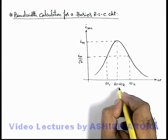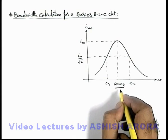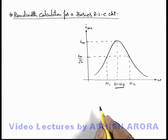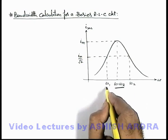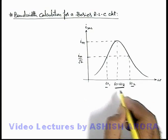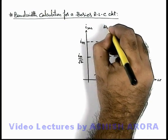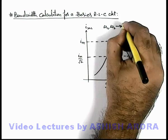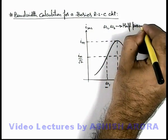We know that at resonant frequency 1 by root LC, the circuit current is maximum. And at half power frequencies omega 1 and omega 2, here omega 1 and omega 2 are termed as half power frequencies.